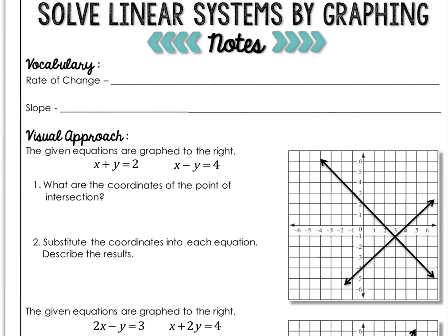In our last lesson, when we talked about writing systems of equations, we said that a shared ordered pair was the solution. So today we're going to practice solving them by graphing to find that shared ordered pair. Let's review some vocabulary. The rate of change is the ratio between a change in X and change in Y. Slope is another word for rate of change and describes the steepness and direction of a line.